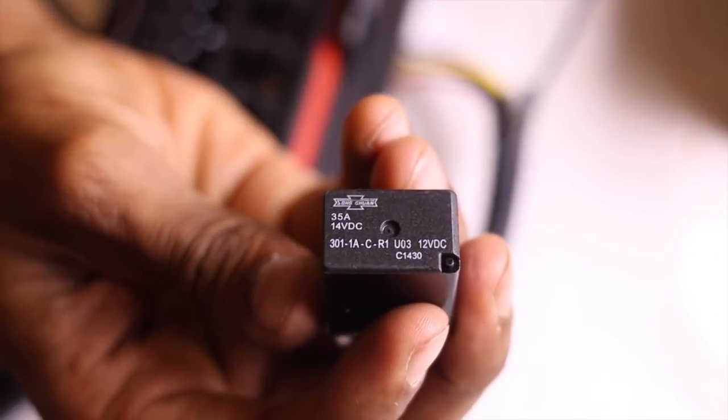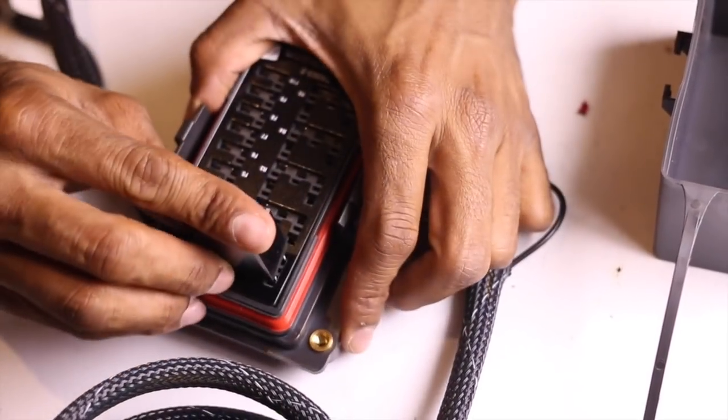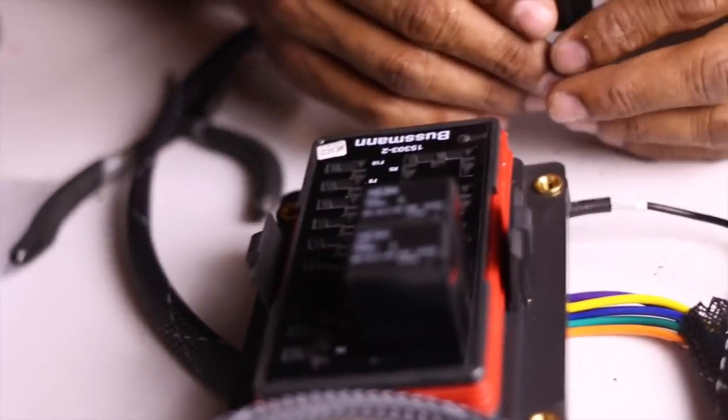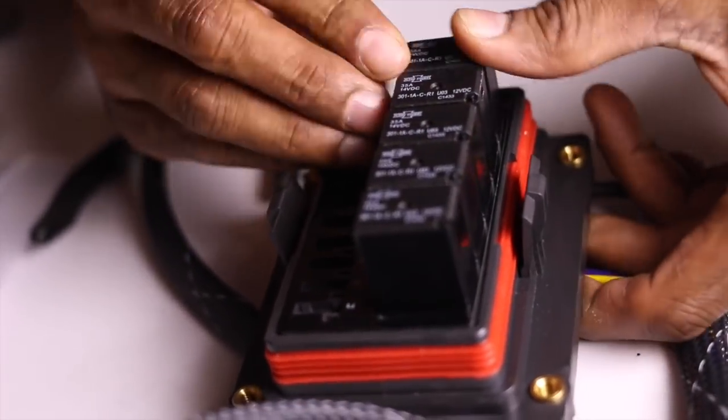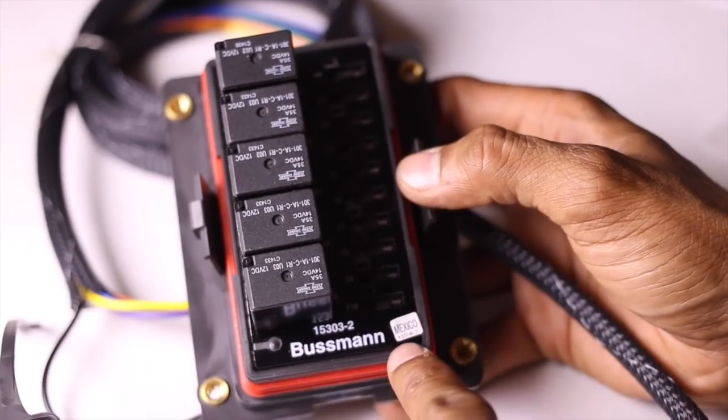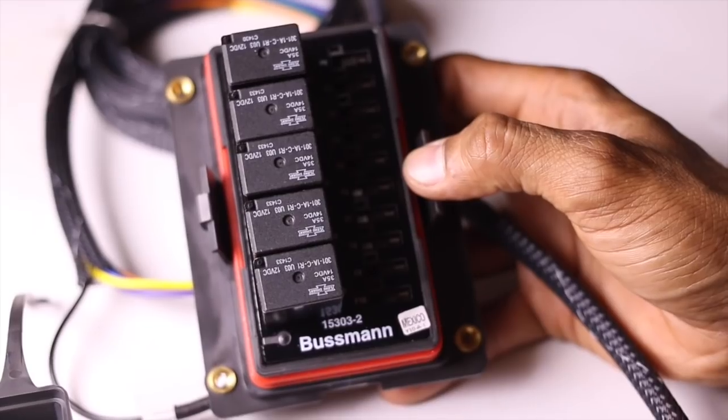Now we're going to start installing the relays into the relay panel, but make sure when you're installing the relays into the relay panel the writing on the relays should be upside down. As you can see the busman is straight and the writing on the relays are upside down.